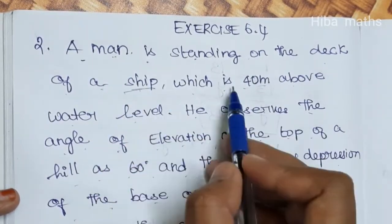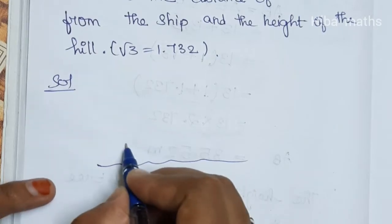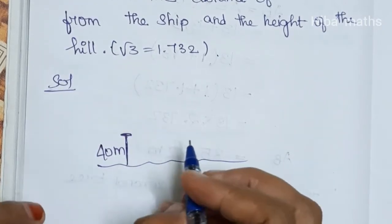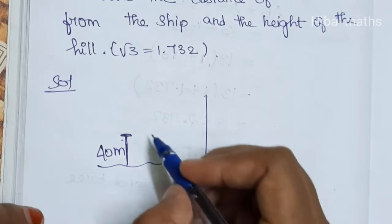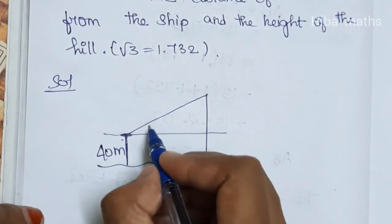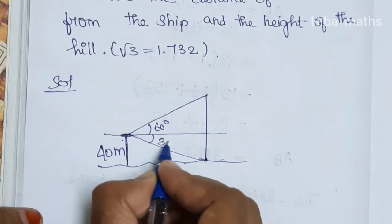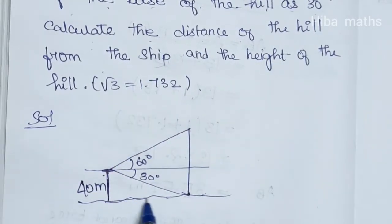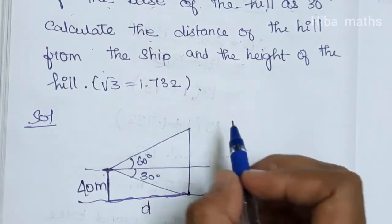A man is standing on a deck of a ship which is 40 meters above water level. In the diagram of the solution, there is a ship and the deck height is 40 meters. Here is the man — you can see the top of the hill as well as the base of the hill. The elevation angle to the top of the hill is 60 degrees and the base of the hill is 30 degrees. We have to calculate the distance of the hill from the ship — let that distance be D — and the height of the hill.